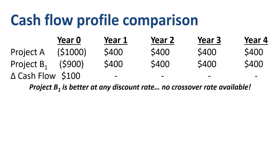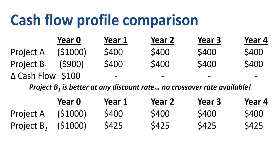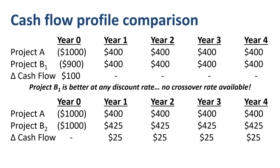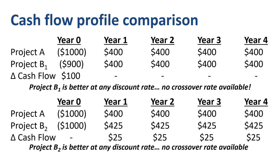Something similar happens when comparing project A to project B2. The upfront investment is the same for both projects — $1,000 each — but in project B2 the expected annual benefits are bigger: $425 per year instead of $400. Project B2 is better than project A at any discount rate, and therefore no crossover rate is available.